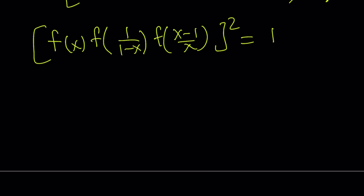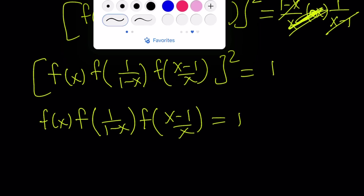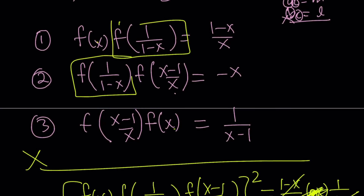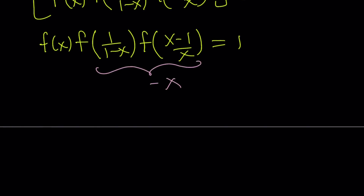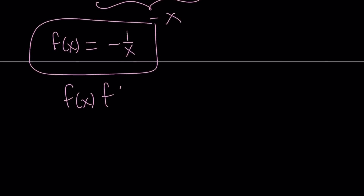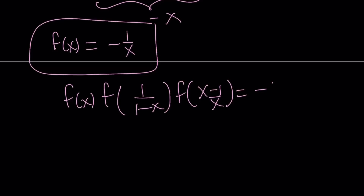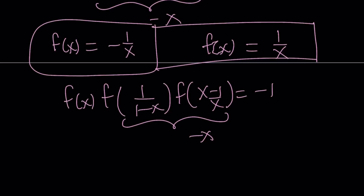Let's get the positive case first. Suppose this product equals 1. How can I solve for f(x) from here? The second equation contains f(1/(1-x)) and f((x-1)/x), so it doesn't have f(x). That means I can replace that product with negative x. So from here we get f(x) equals negative 1/x — which is really cool, and you can check it. And what if this product equals negative 1? Then f(x) needs to be 1/x. And those are all the solutions — you can go ahead and check both.